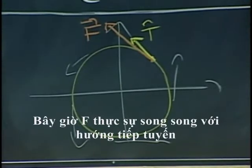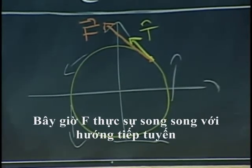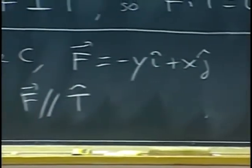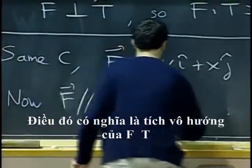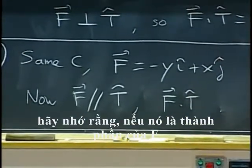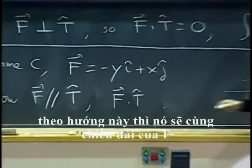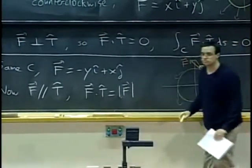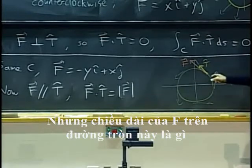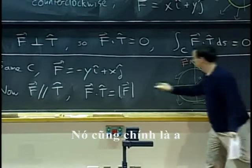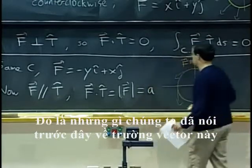So now f is actually parallel to the tangent direction. That means that the dot product f dot t, remember, that is the component of f in this direction. That will be the same as the length of f. But what is the length of f on this circle if this radius is a? It is just going to be a. That is what we said earlier about this vector field.